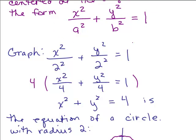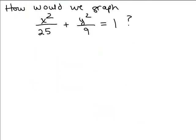So we want to see what happens if these are different numbers. How would we graph x squared over 25 plus y squared over 9 equals 1? The first thing to notice is our trick of multiplying by the least common denominator will not give us a circle — the least common denominator is 25 times 9, and you would get different coefficients for x and y. So to graph something, if you don't know what it looks like, you could make a table of ordered pairs. One simple thing is to find the x and y intercepts.